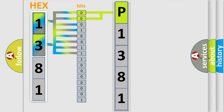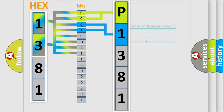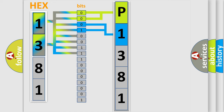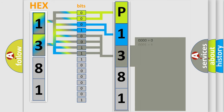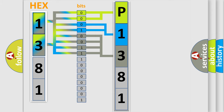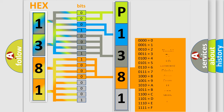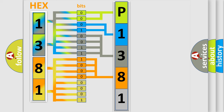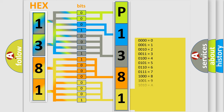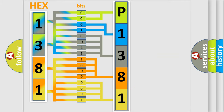The next two bits determine the second character. The last bits of the first byte define the third character of the code. The second byte is composed of a combination of eight bits. The first four bits determine the fourth character of the code, and the combination of the last four bits defines the fifth character. A single byte conceals 256 possible combinations.